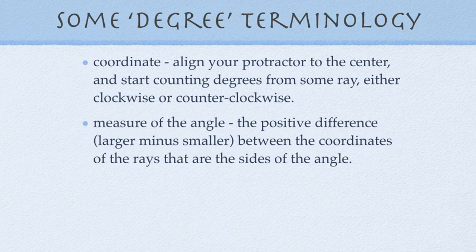A little bit more, coordinates. So when you align your protractor to the center and start counting degrees from some ray, in other words, make one ray the zero point, the point where you're going to start counting from, and then you can count either clockwise or counterclockwise. And as you mark off rays and name them by their degree measure, each one of those rays marks a coordinate or has a coordinate that can be assigned to it. The measure of an angle, therefore, is the positive difference. That means the larger minus the smaller between the coordinates of the rays that are the sides of the angle.